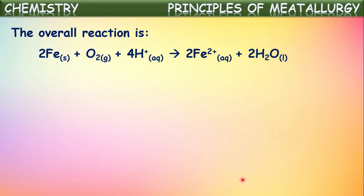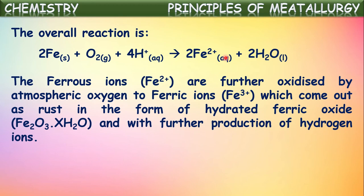The overall reaction is: in the presence of moisture, iron is first converted into Fe²⁺ (ferrous ions). These ferrous ions are further oxidized by atmospheric oxygen to form Fe³⁺ (ferric ions), which come out as rust in the form of hydrated ferric oxide. Rust is chemically known as hydrated ferric oxide, with the formula Fe₂O₃·xH₂O, where x represents the number of water molecules, which may vary. In this way rust is formed on metallic objects with the help of oxygen and moisture.